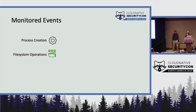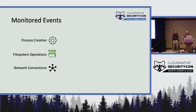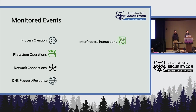Another useful category is network connection events. These allow us to identify connections with known bad or malicious IP addresses and track network-based activity of various processes, executables, pods, and containers. DNS requests and responses are also another useful set of data — they allow us to detect when a process tries to look up a suspicious domain name. Another category is interprocess interactions, or when one process tries to inject into the memory of another process. We collect events relevant to this category because these techniques are commonly used in attacks like process injection.